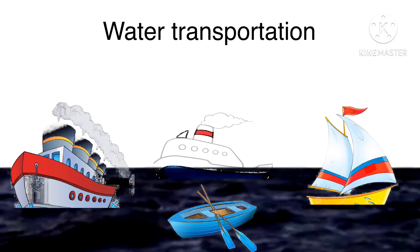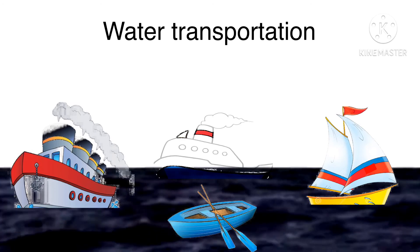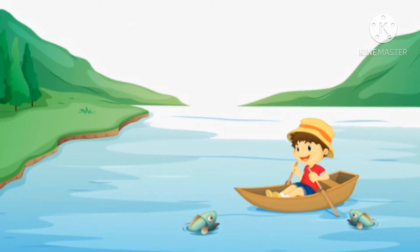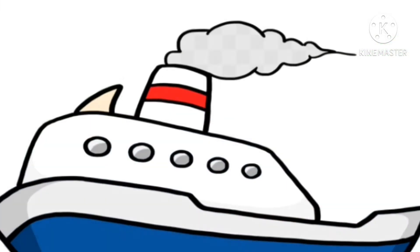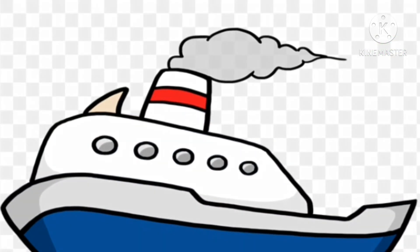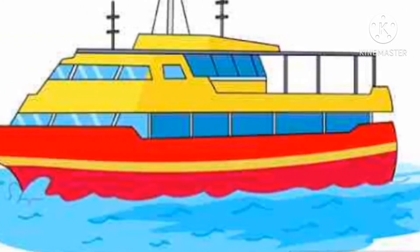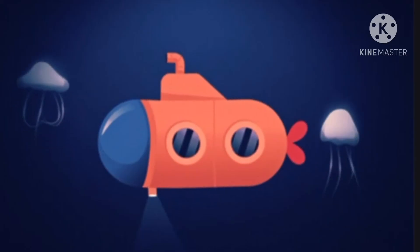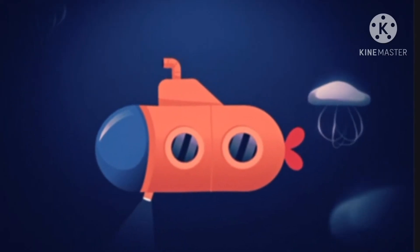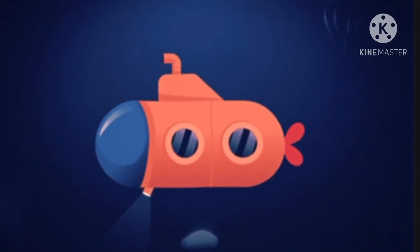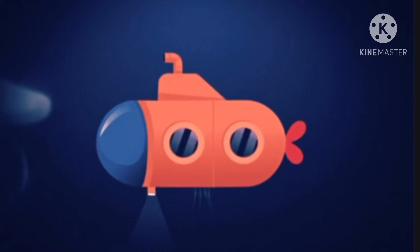Submarine and ship are some of the examples of water transport. While boats are used for short distances, ships are used to cover larger distances. Cargo ships are used for transportation of goods. Submarines are watercrafts that operate underneath the water.